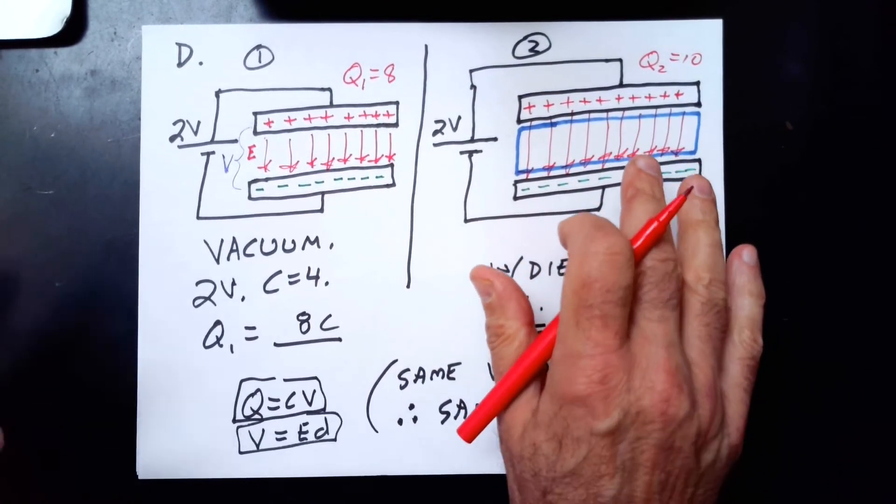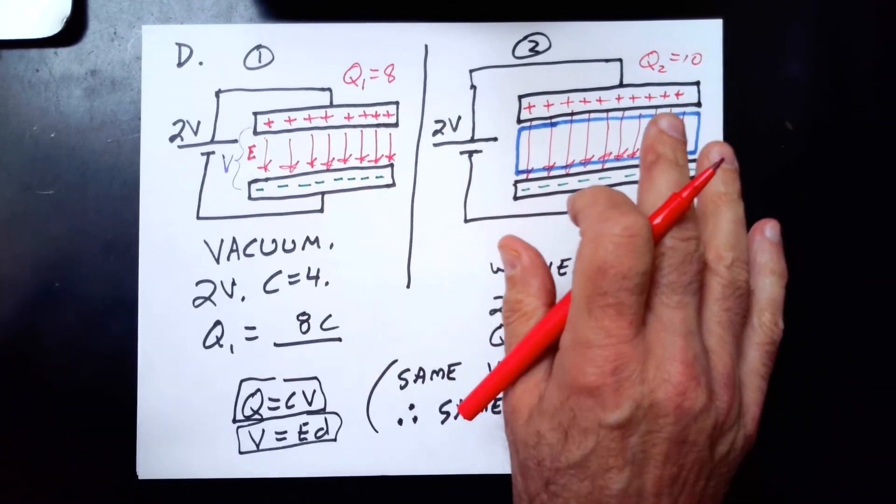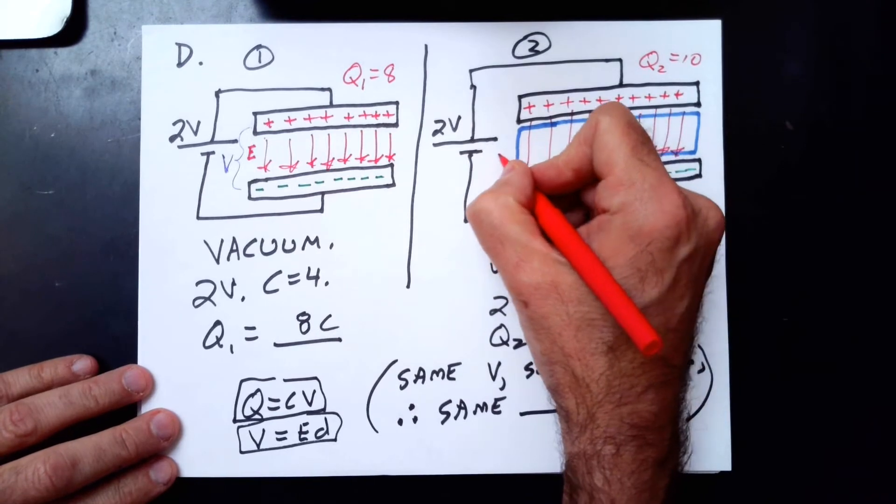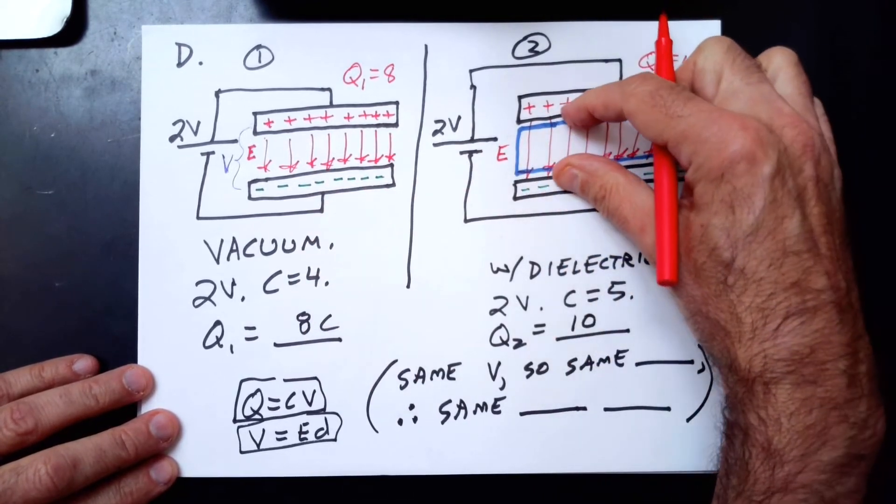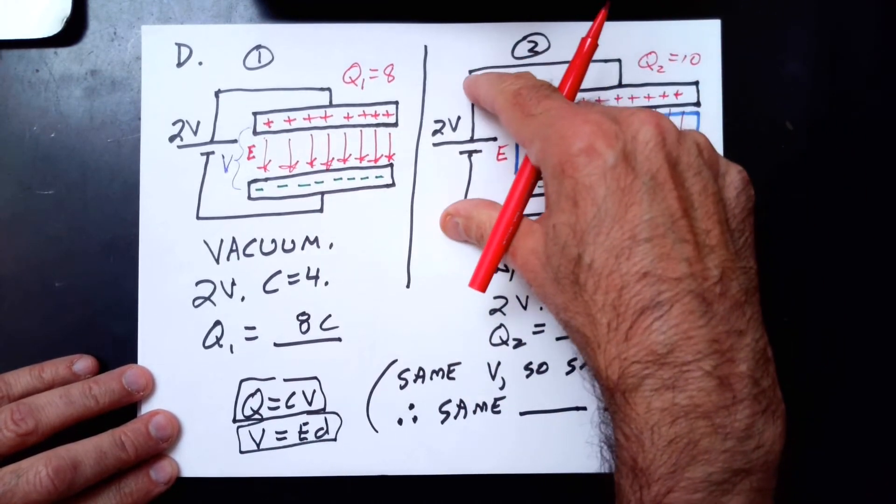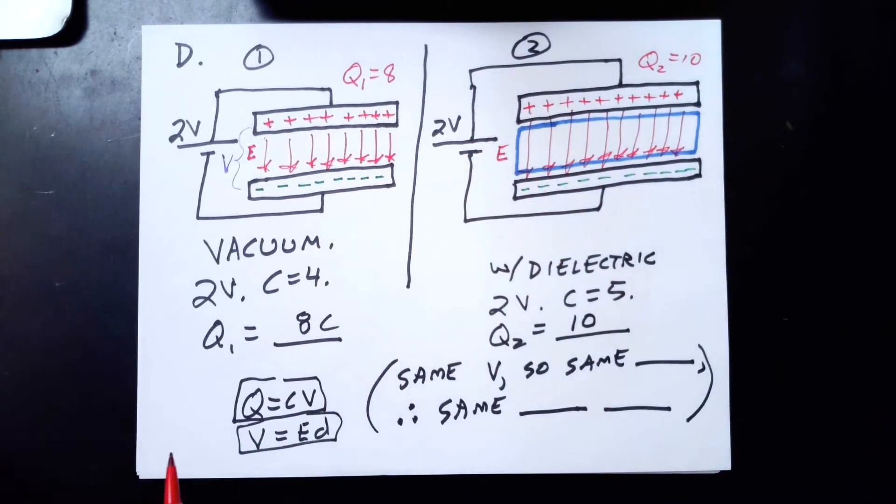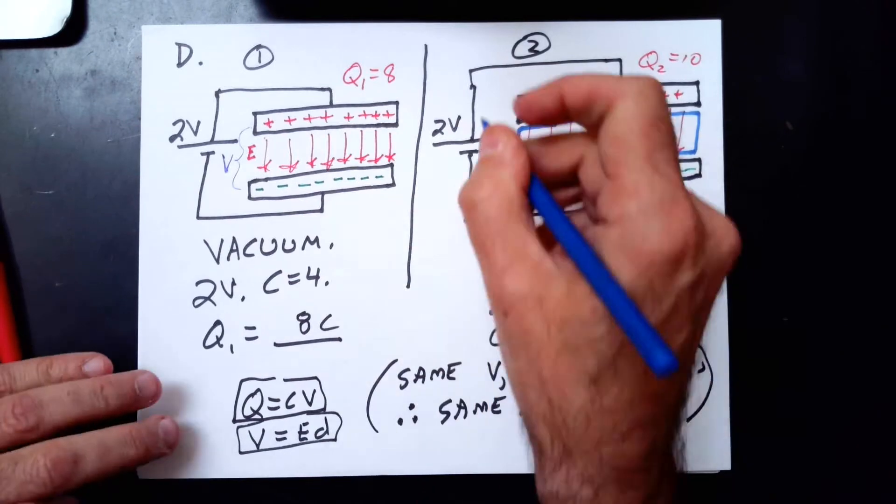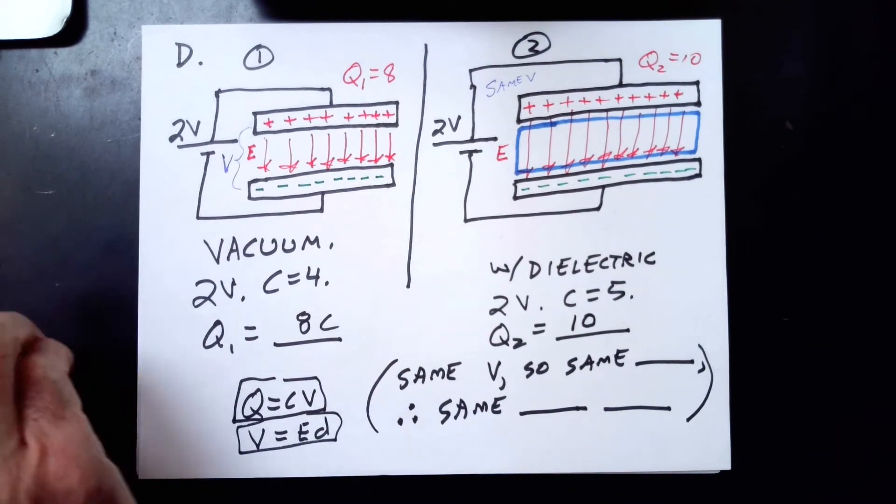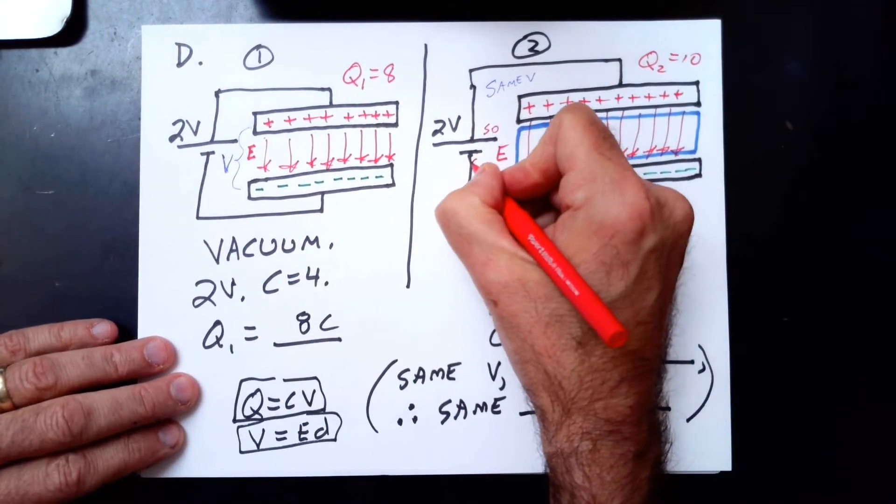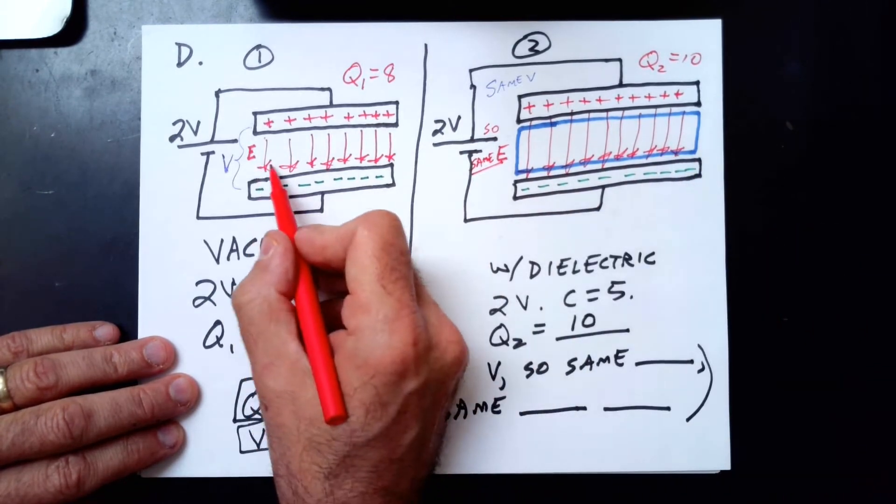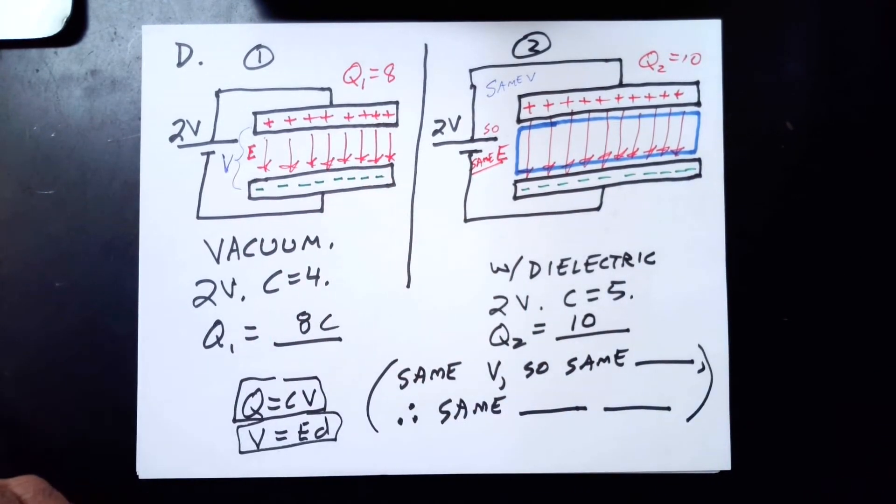Could this be the case right here? Could that be the situation? And the answer is absolutely not, because our electric field now is stronger than it was before, but it's the same spacing. So by this, we would get a bigger voltage, but it's connected to a battery. The voltage has to be the same. Same V. So same E.